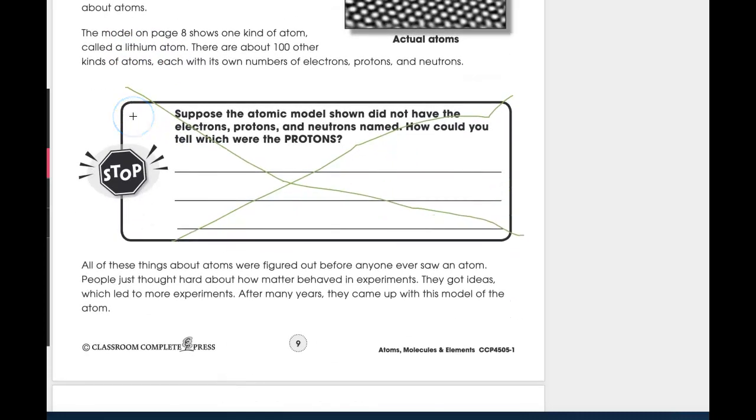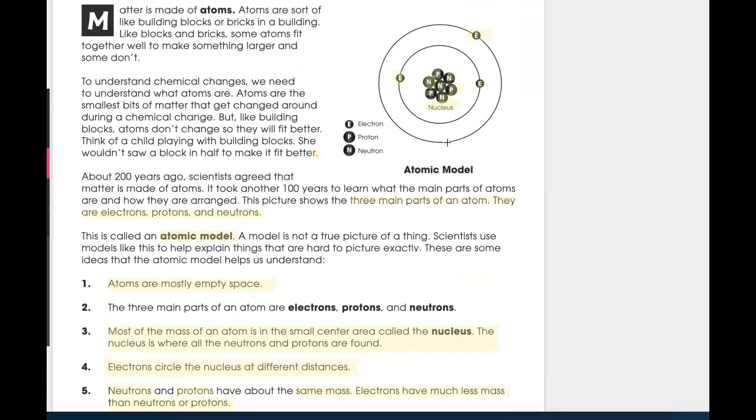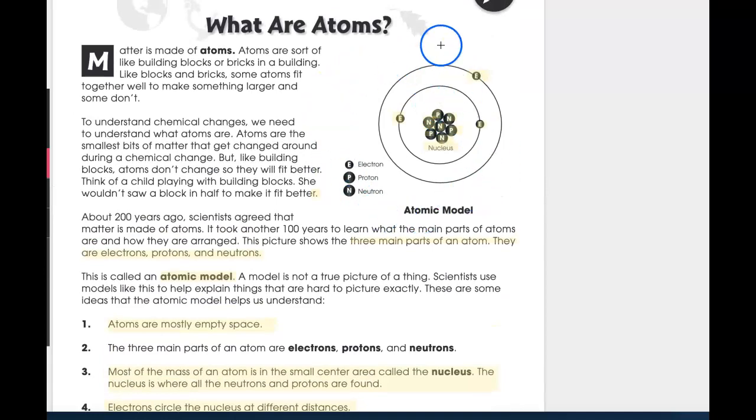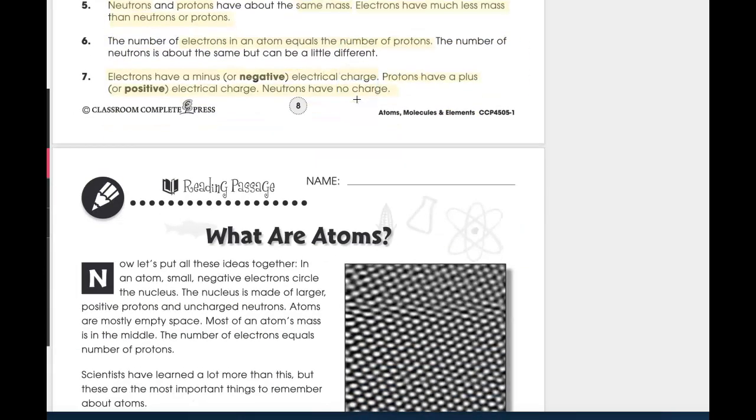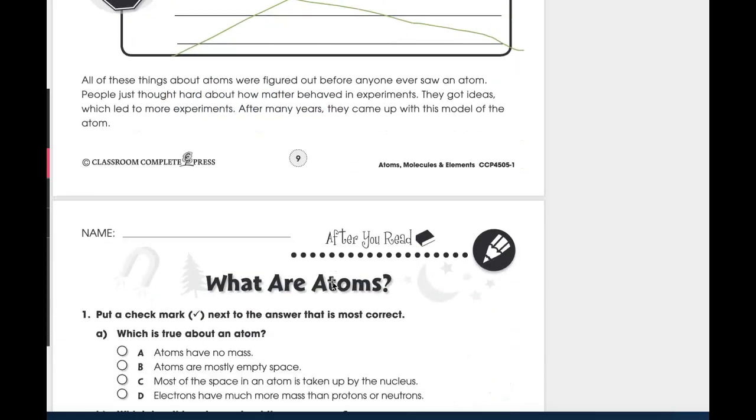The model on page 8 shows one kind of atom called a lithium atom. There are about 100 other kinds of atoms, each with its own number of electrons, protons, and neutrons. Go back up here, guys. This is page 8. This is the lithium atom right here. The very bottom of your page. It says, All of these things about atoms were figured out before anyone ever saw an atom. People just thought hard about how matter behaved in experiments. They got ideas, which led to more experiments. After many years, they came up with this model of an atom.